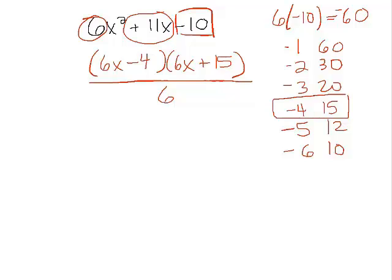Okay. 6x minus 4. Either that binomial will get divided by 6. Or 6x plus 15 can get divided by 6. Ah. That's really annoying. Because 6x is divisible by 6, but 4 isn't and 15 isn't. So I have another idea. Let's break up the 6.